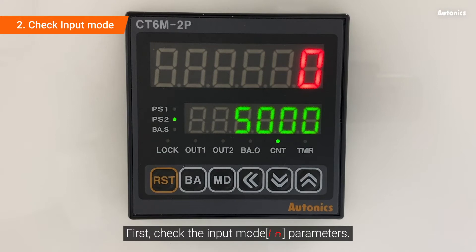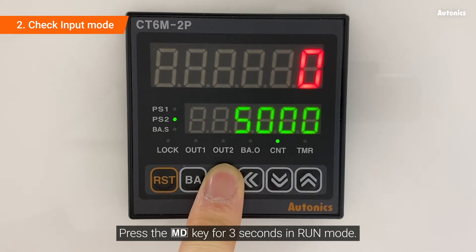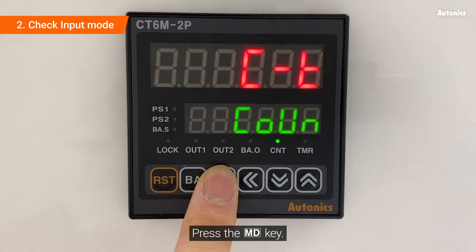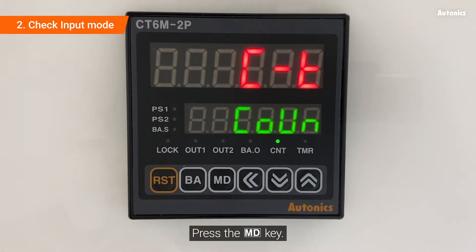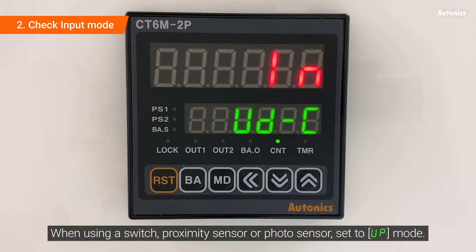First, check the input mode IN parameter. Press the MD key for 3 seconds in run mode, then press the MD key again. UD-C is an encoder-only mode. When using a switch, proximity sensor, or photo sensor, set to UP mode.